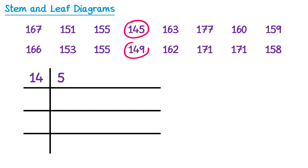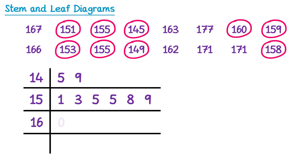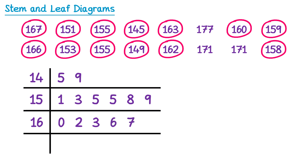The next smallest number is 149 — stem 14, leaf 9. Then 151, stem 15, leaf 1. Then 153, stem 15, leaf 3. Then 155 appears twice, so we put two 5s in the row for stem 15. Then 158 gives a leaf of 8, and 159 gives a leaf of 9. Moving into the 160s: 160, 162, 163, 166, and 167 all have stem 16. Then the 170s: 171 appears twice, so two 1s, and finally 177.